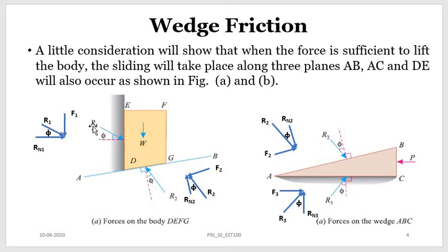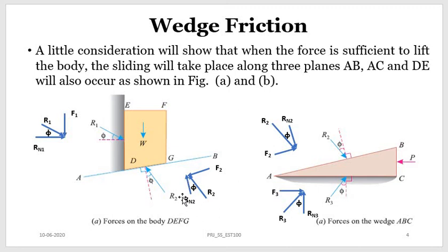Phi is the angle made by R1 with the normal reaction. Similarly, on face AB, when we apply the force on the wedge, the lower face of the block moves upward, so the frictional force F2 acts in the downward direction. The normal reaction Rn2 is perpendicular to the inclined plane AB, and R2 is the resultant of this frictional force and the normal reaction.